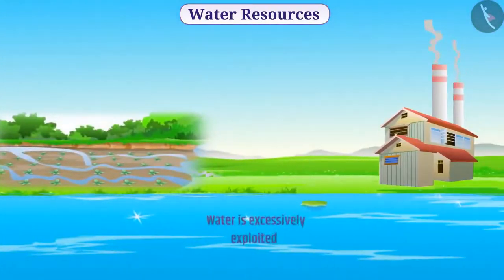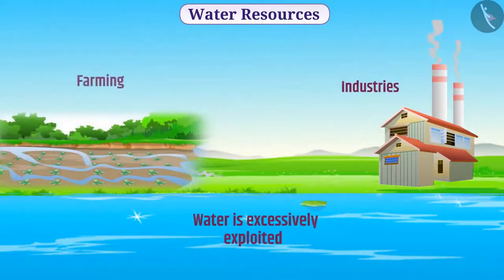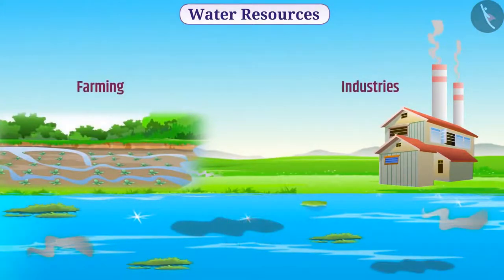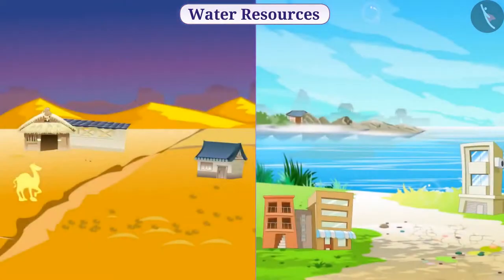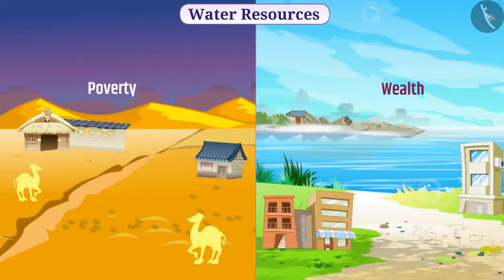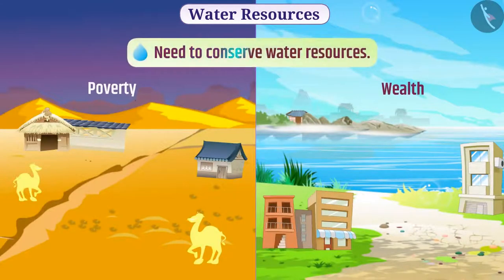Water is excessively exploited in industries and farming. Similarly, water pollution is also increasing due to various reasons. Due to many such reasons, the amount of available water has decreased. Absence of water is also closely related to poverty. Therefore, we need to conserve water resources.